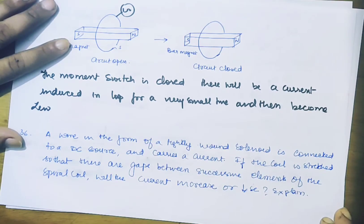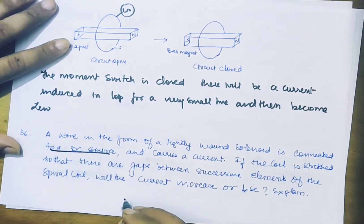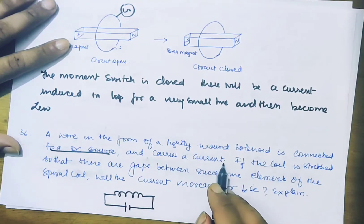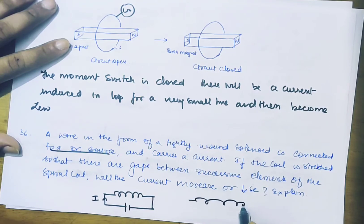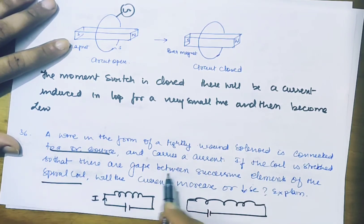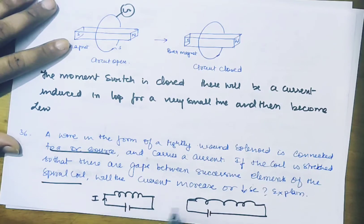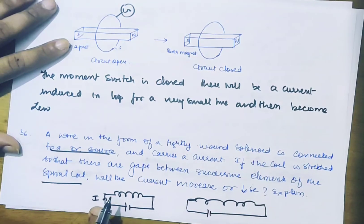A wire in the form of a tightly wound solenoid is connected to a DC source and carries a steady current — meaning the current doesn't change. If the coil is stressed so that there are gaps between the successive elements of the spiral coil, will the current increase or decrease? Explain.